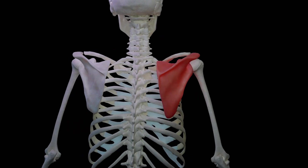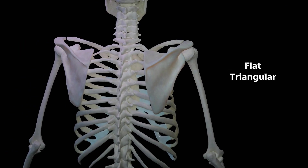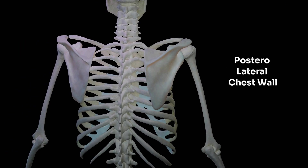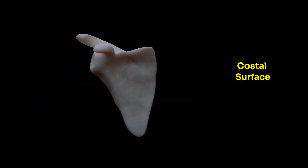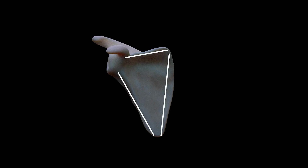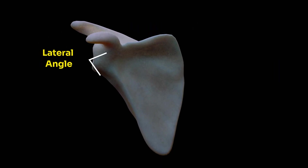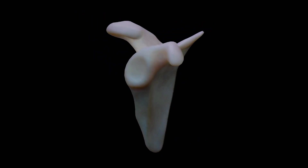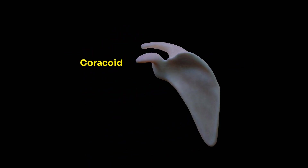In this video, we are going to discuss about the scapula. The scapula is a flat triangular bone situated on the posterolateral part of the chest wall, extending from the 2nd to 8th ribs. It has a dorsal surface and a costal surface. It also has three borders: a lateral border, a medial border, and a superior border. It also has three angles: a lateral angle, an inferior angle, and a superior angle. It also has three processes: a spine, an acromion process, and a coracoid process.